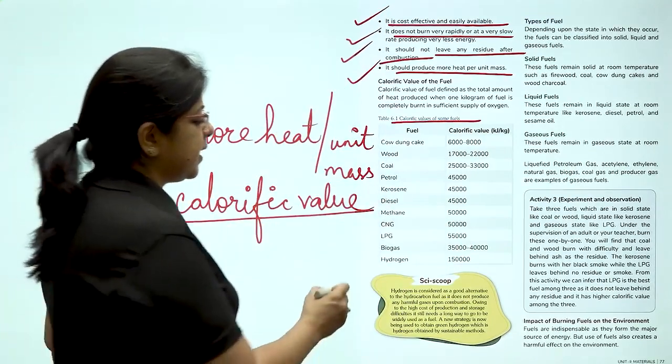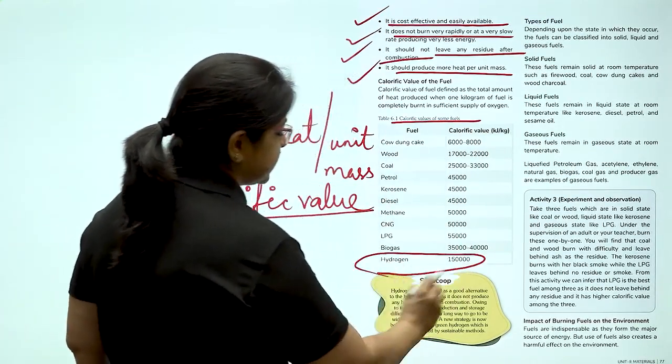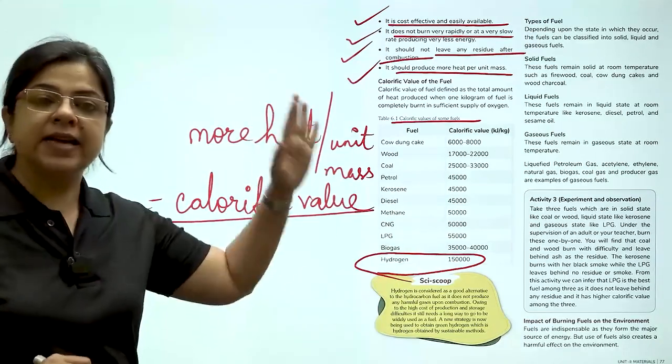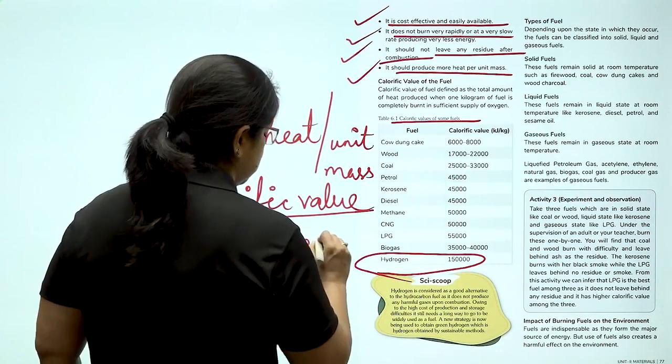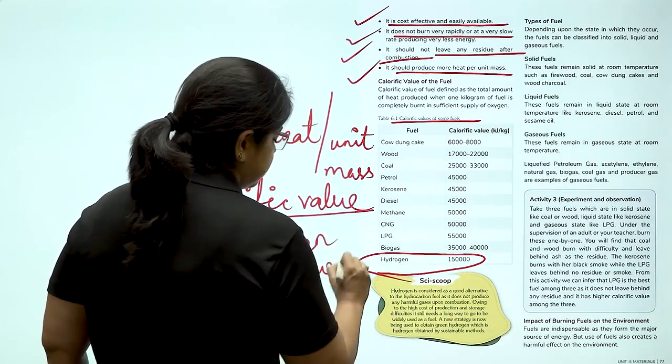So, as you can see, the calorific value of hydrogen is the maximum and it creates least pollution. That is the reason it is known as green fuel.